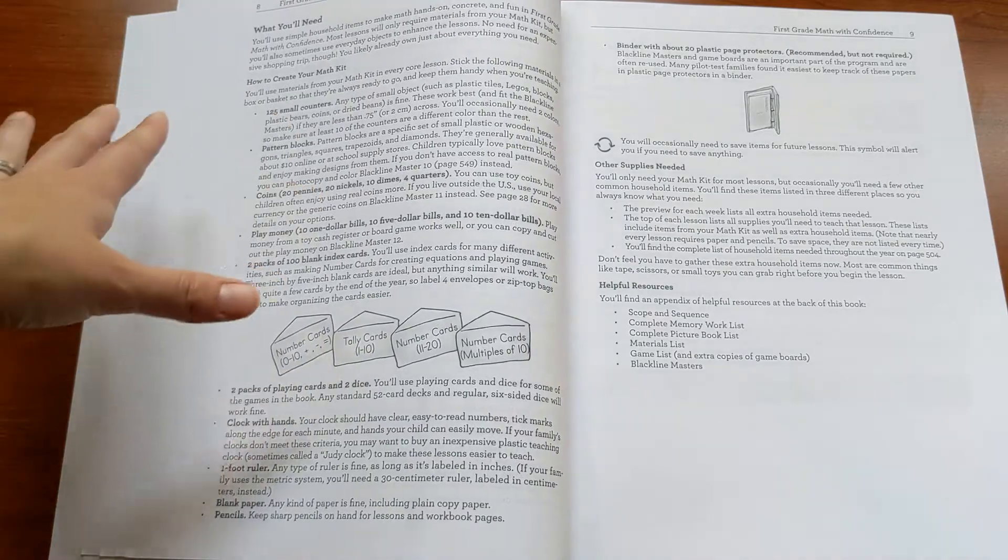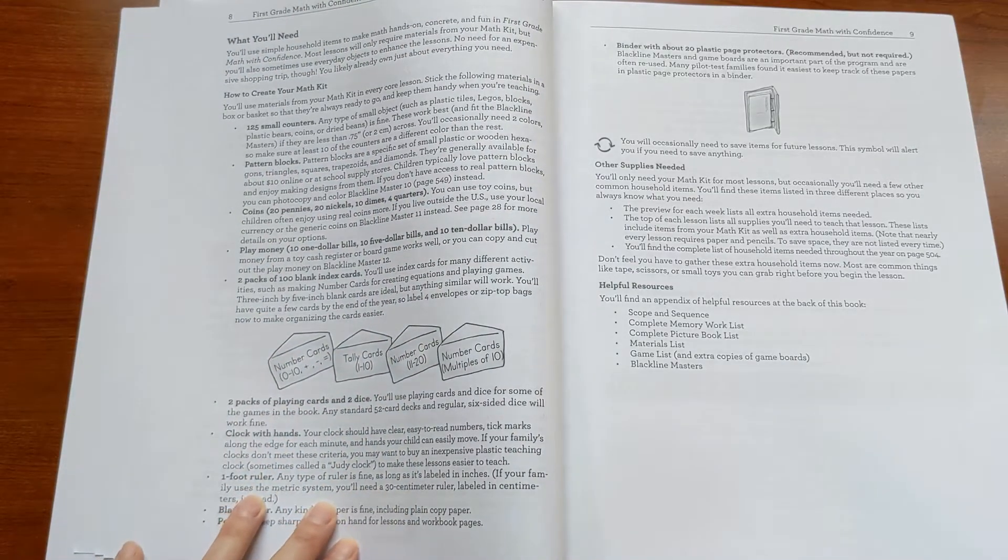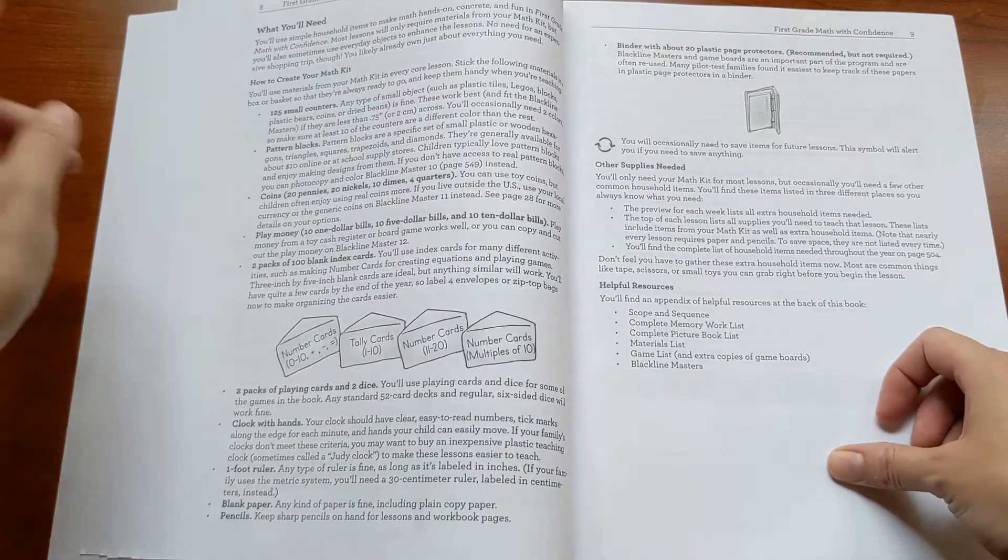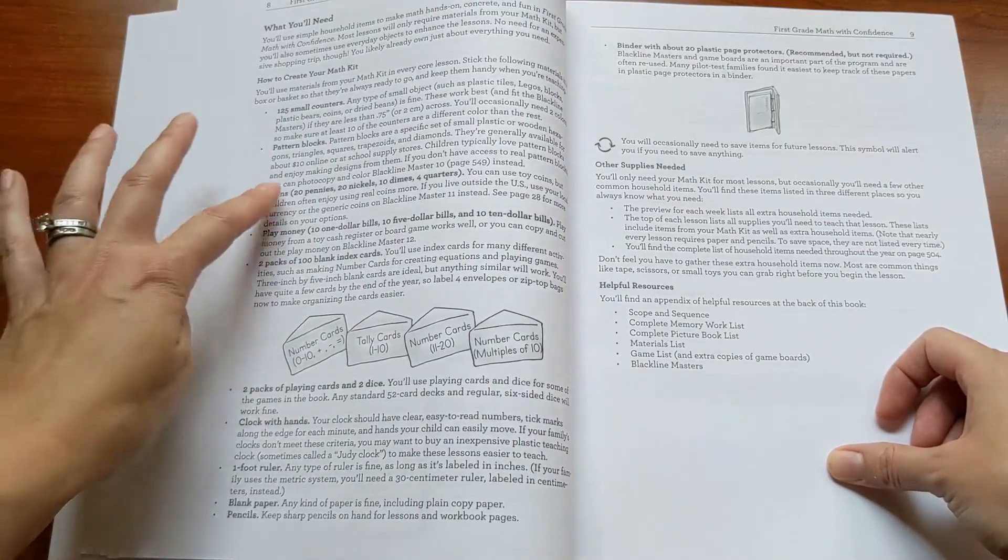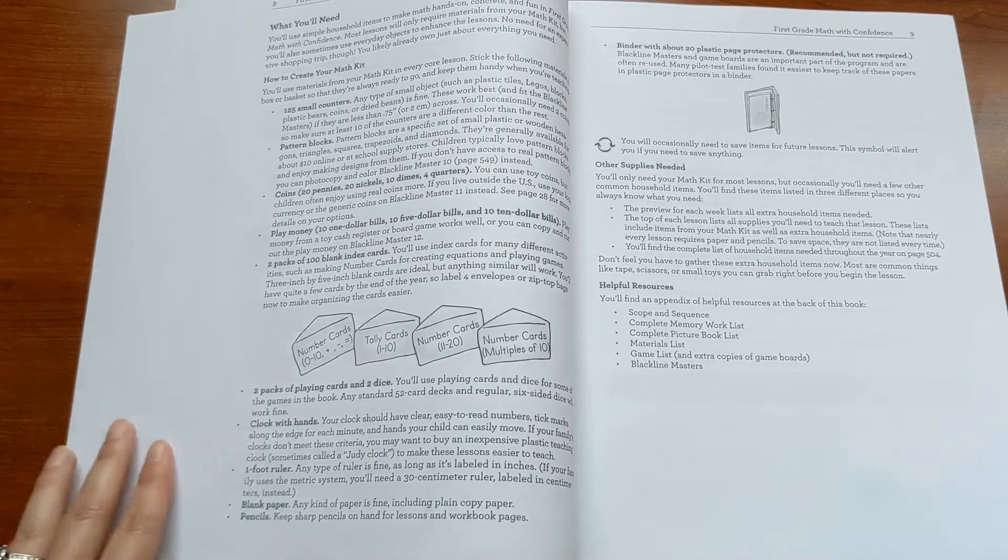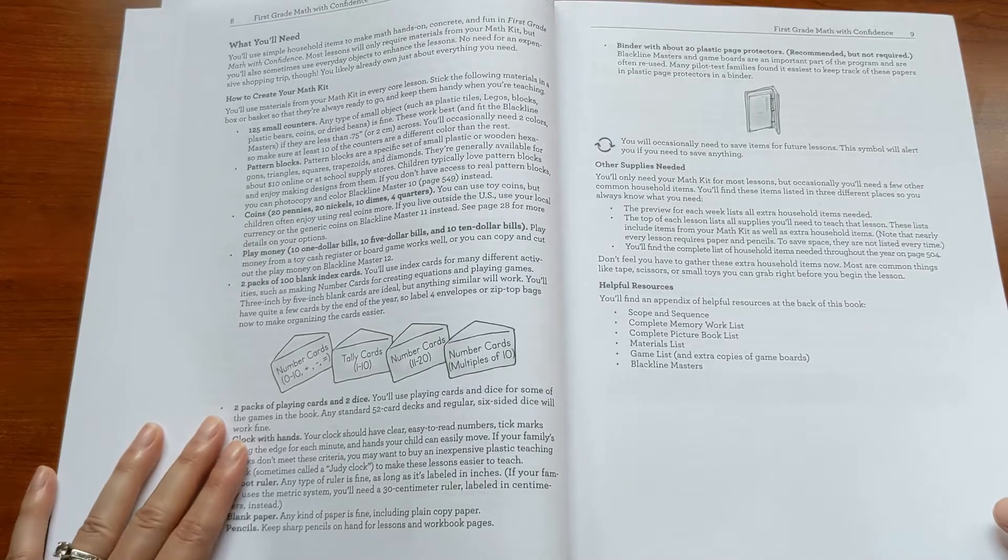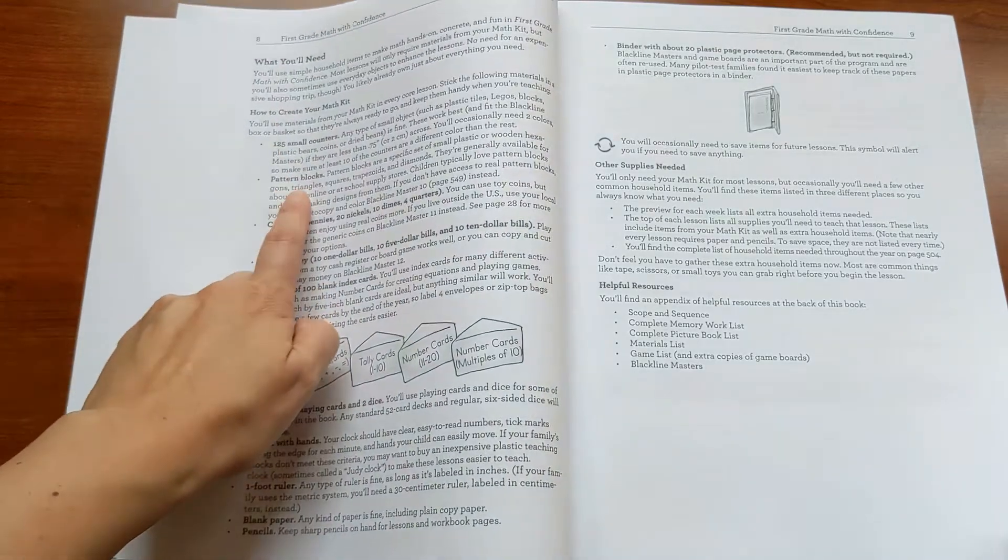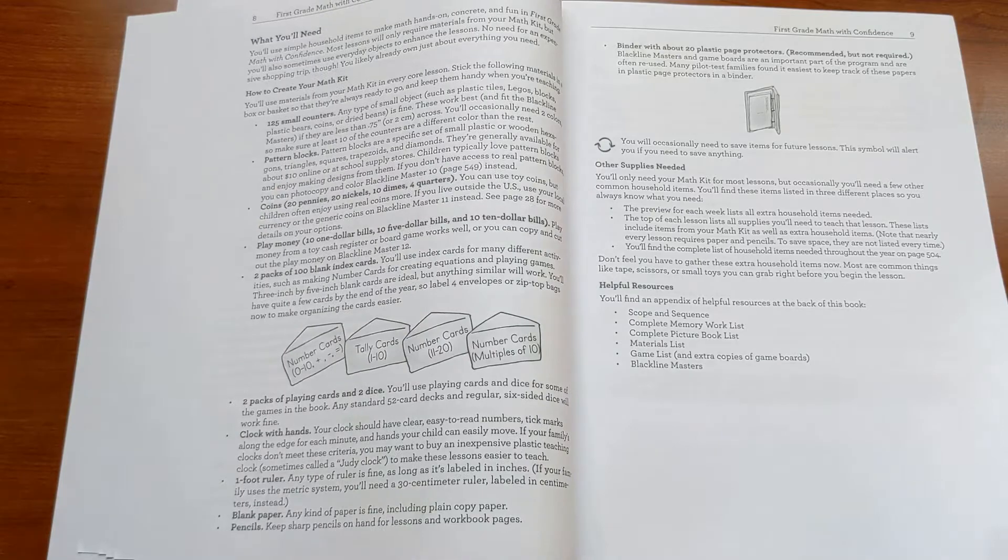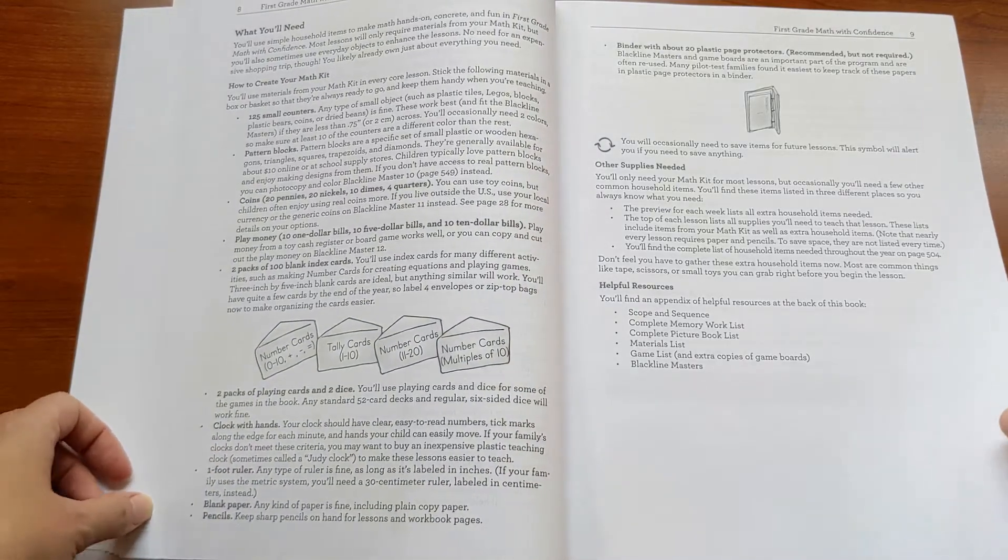And then finally in the introduction there's a list of what you'll need and these are almost all household items you probably already have like counters, pattern blocks, coins, play money, index cards, a clock, a ruler—so real simple stuff that you probably already have and can just grab to put together your math kit. The one thing you might need to buy is pattern blocks, but they're usually like ten or fifteen dollars online, so very easy to find.